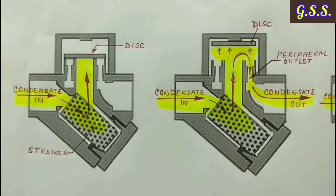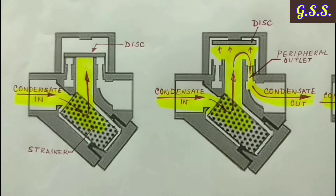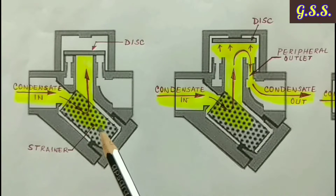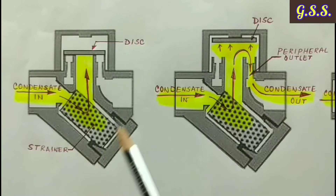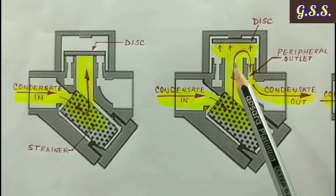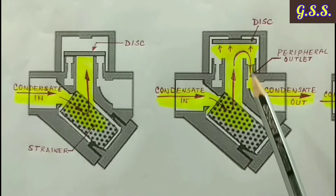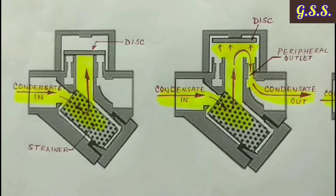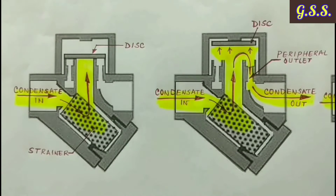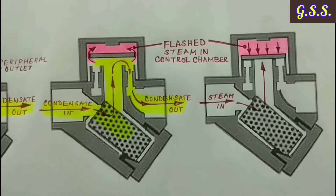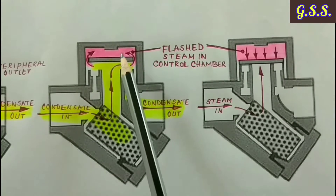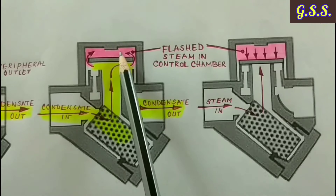Now we will see how a thermodynamic steam trap works. At startup, air and condensate enters the trap through the strainer where particles are screened. Then condensate pushes up the disc and discharges through the peripheral outlet. While discharging, due to the narrow peripheral area, its velocity increases and pressure decreases, and some part of the condensate flashes to steam. This flash steam is accumulated in the control chamber.